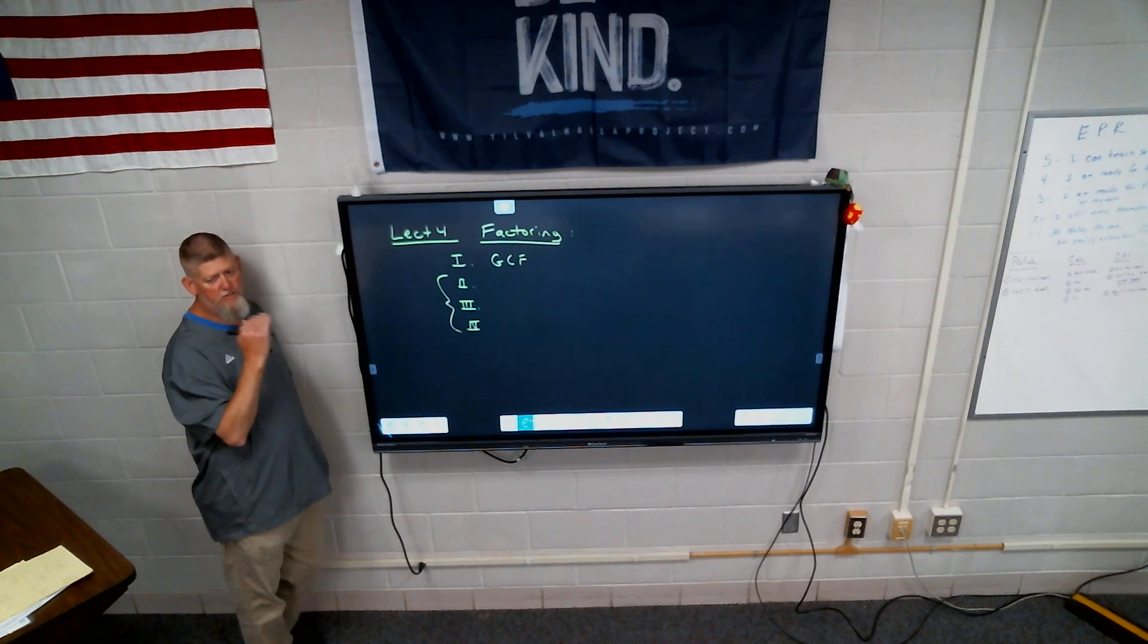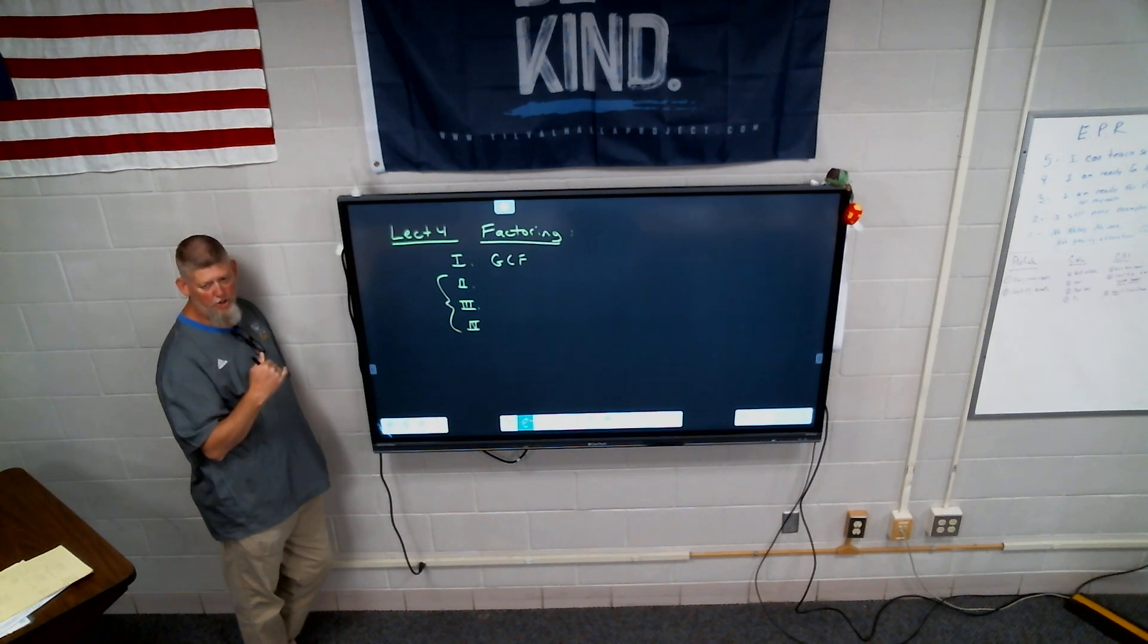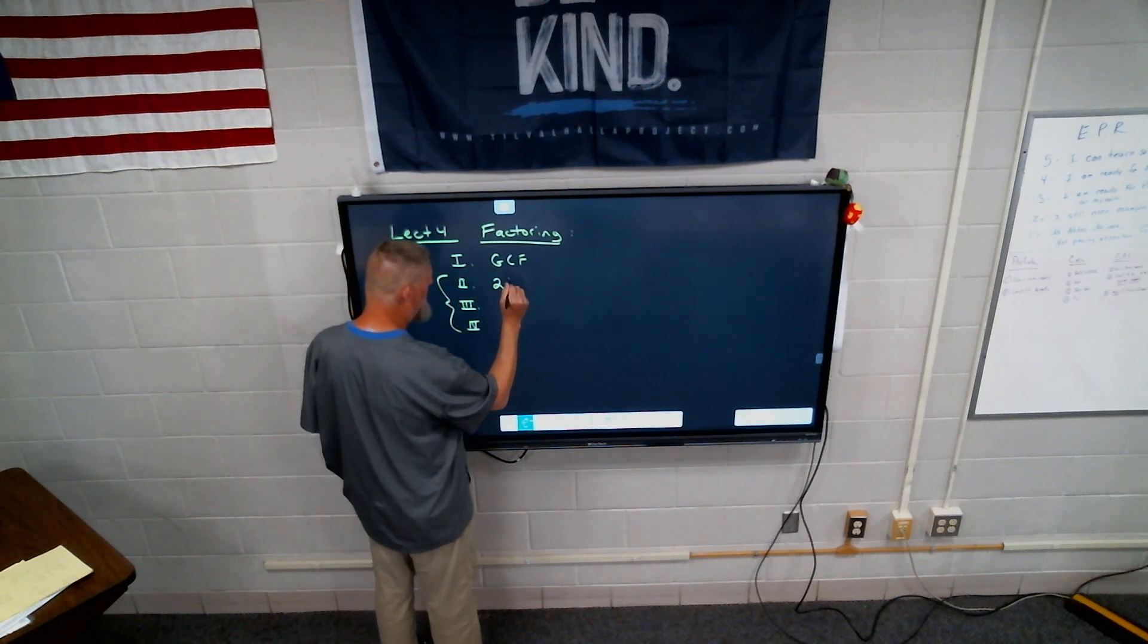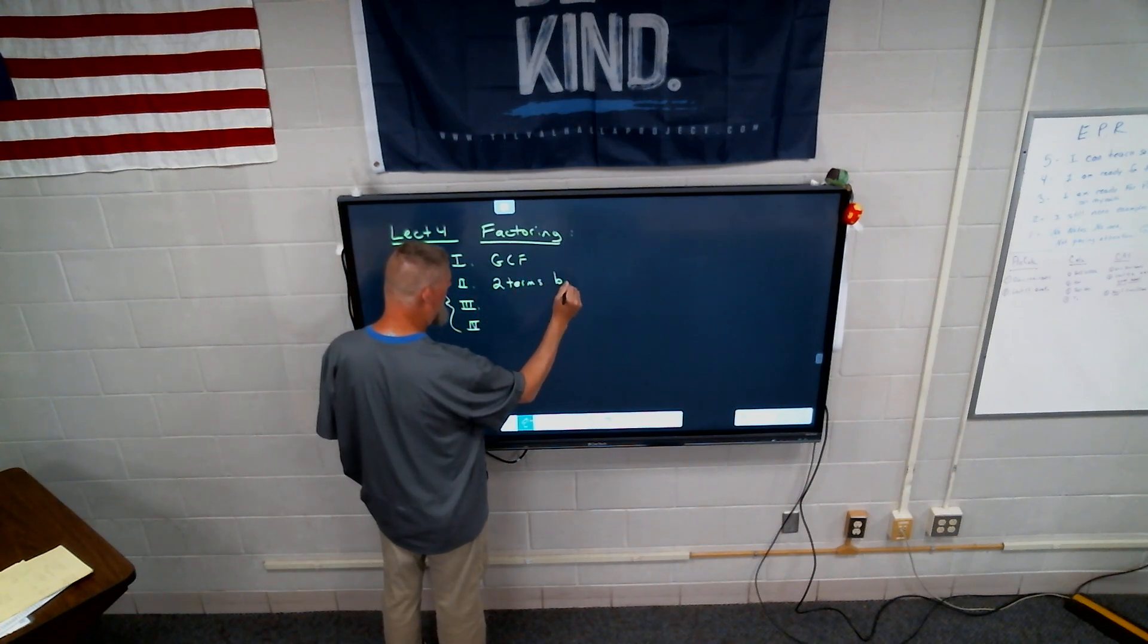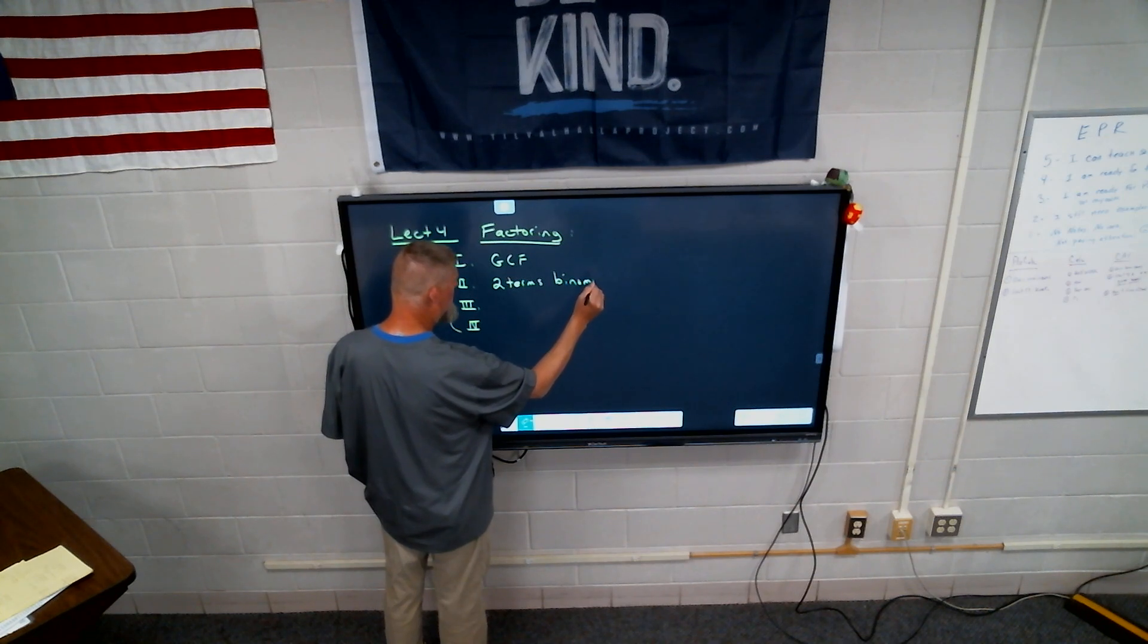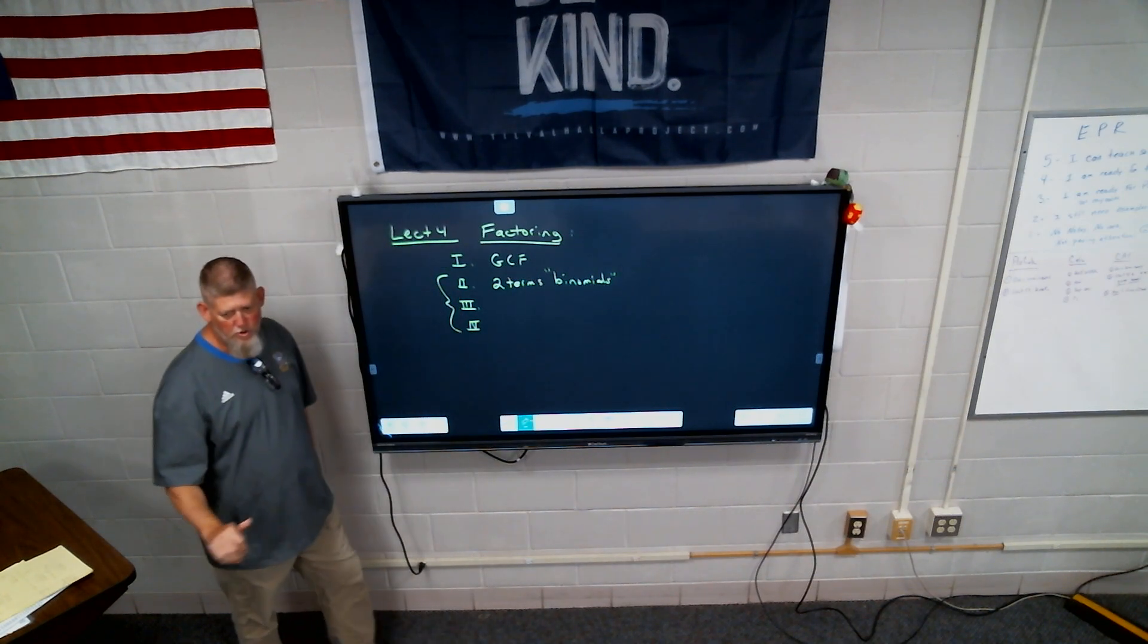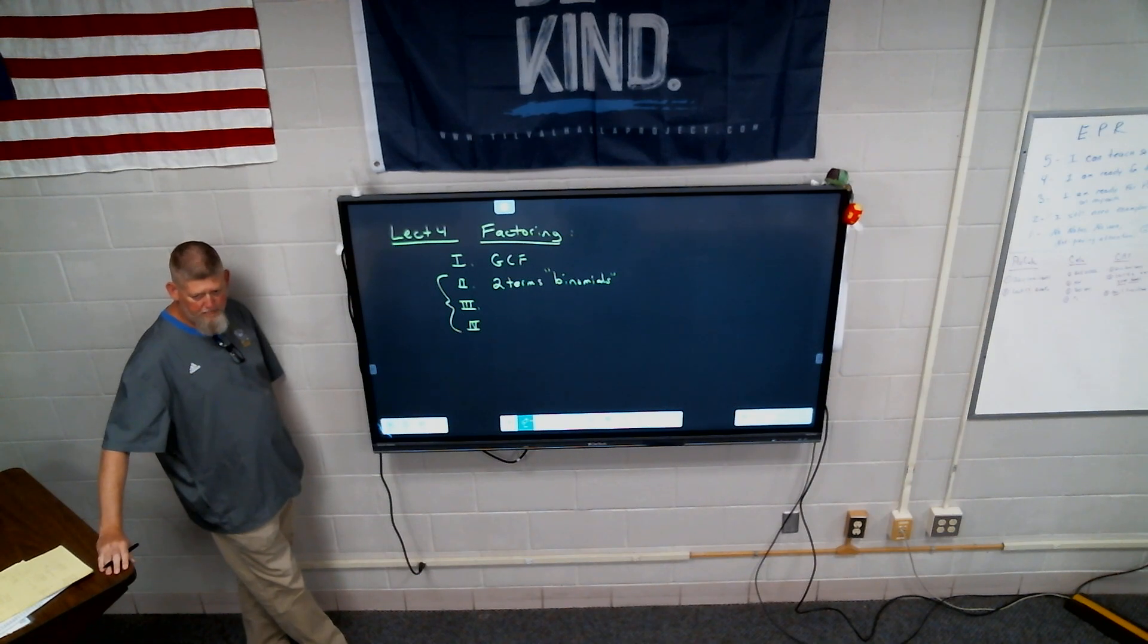So after number one, it's always the greatest common factor. After that, it's kind of which step are you going to do? The second, number two, we looked at two terms. We looked at binomials, right? Two terms, binomials, and there was two different types. The difference of two squares, sum or the difference of two cubes.